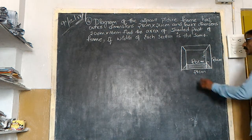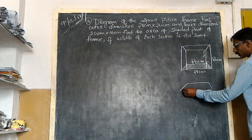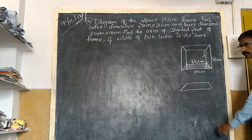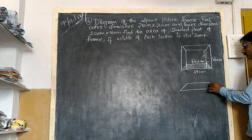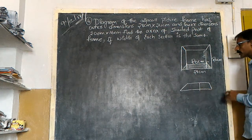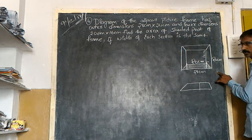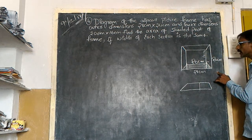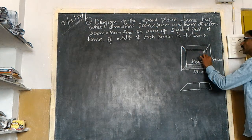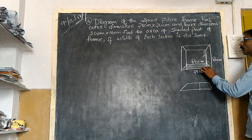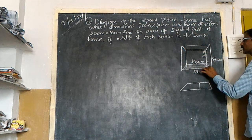It is very simple. If you observe this, it is in the shape of a trapezium. This width we can find with the help of these measurements. From here to here, how many centimeters? Sixteen.